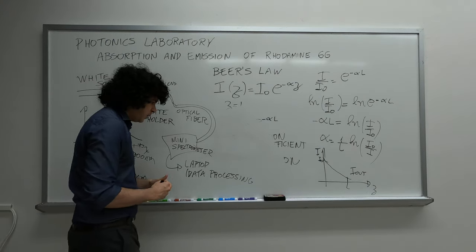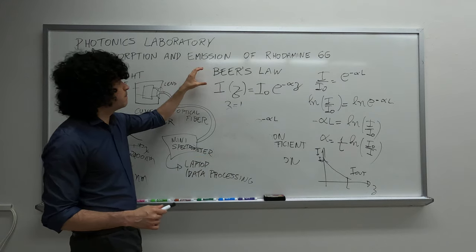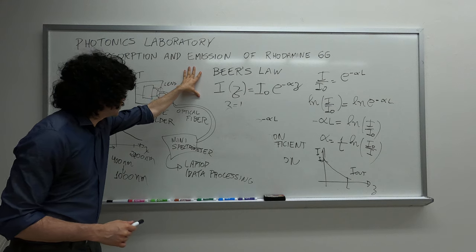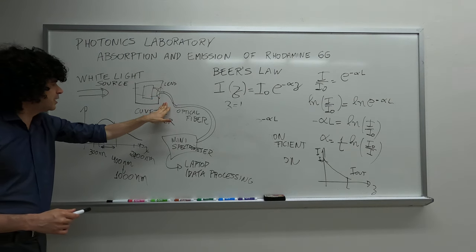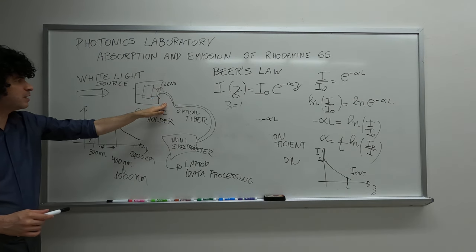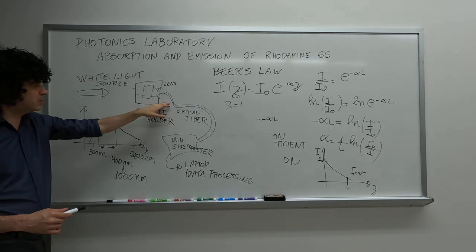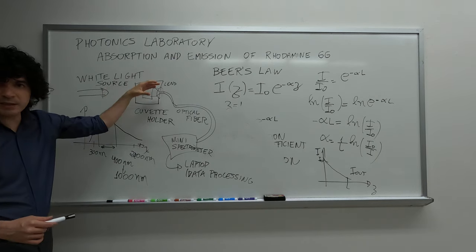Later on, we measure the emission of Rhodamine 6G. So the emission you cannot measure this way because there is a lot of background from the input light.